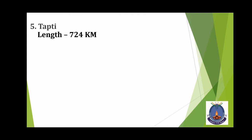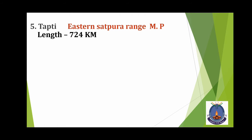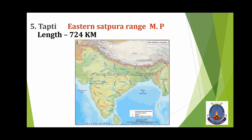Tapti. Tapti River का origin कहां से होता है? Eastern Satpura Range, Madhya Pradesh. Length कितनी है? 724 km. आप देख सकते हैं जो dark blue है वह Tapti River है।